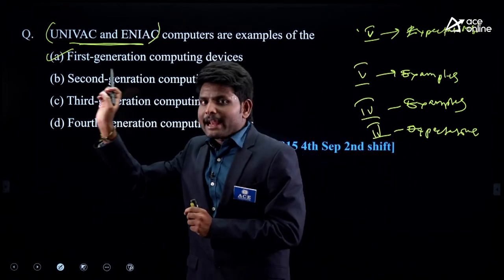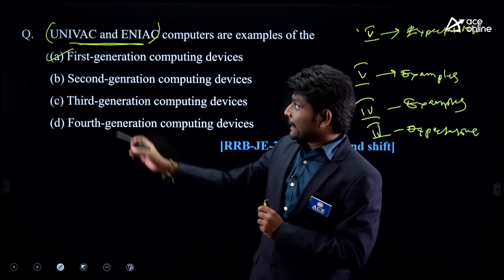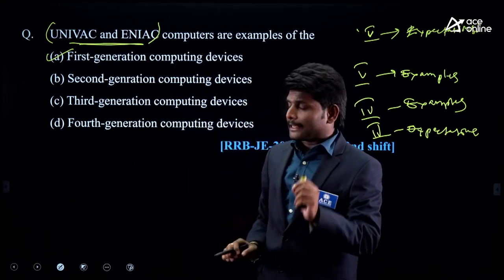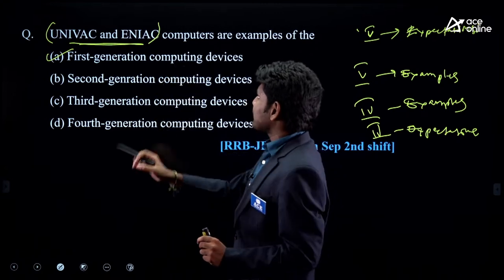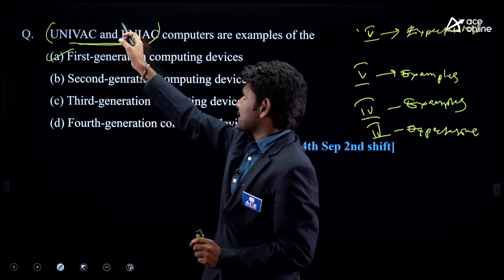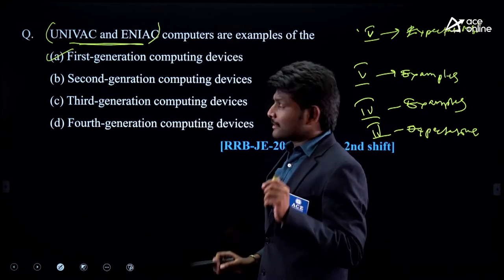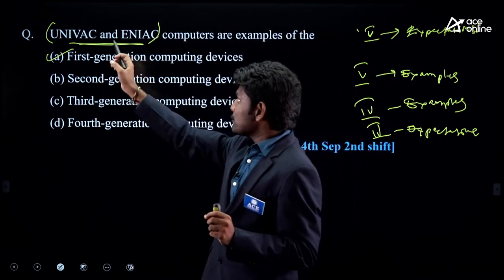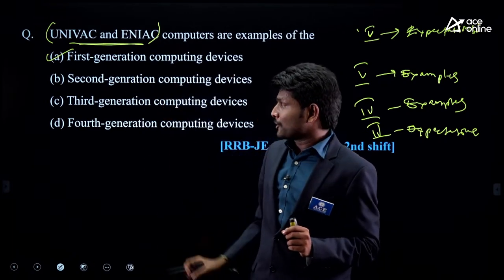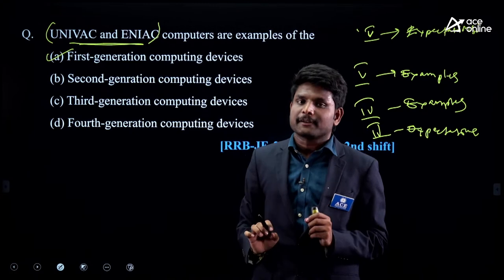This year they gave examples from first generation. Next year they may give two example computers from second generation and ask the same question. You should be able to identify that those two names are not in first generation — those computers are from second generation. That's why you choose second generation as the answer.